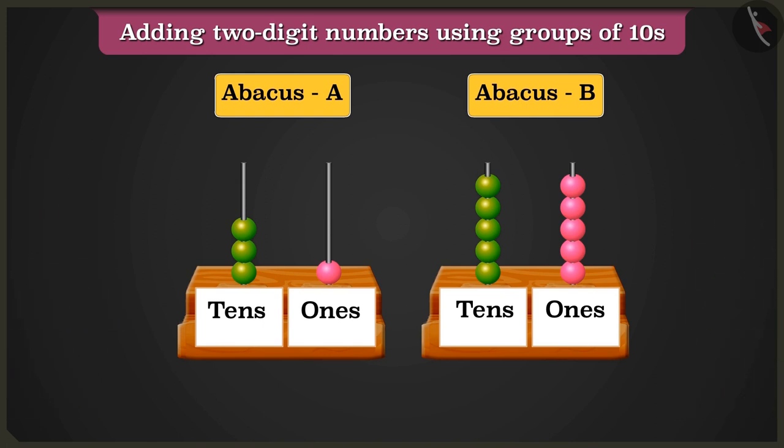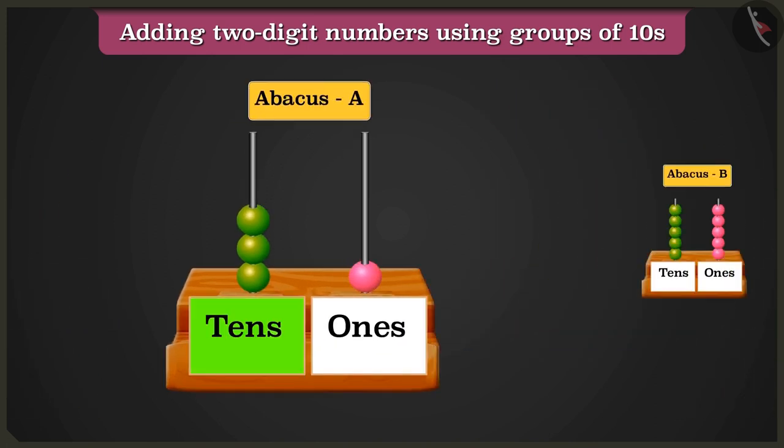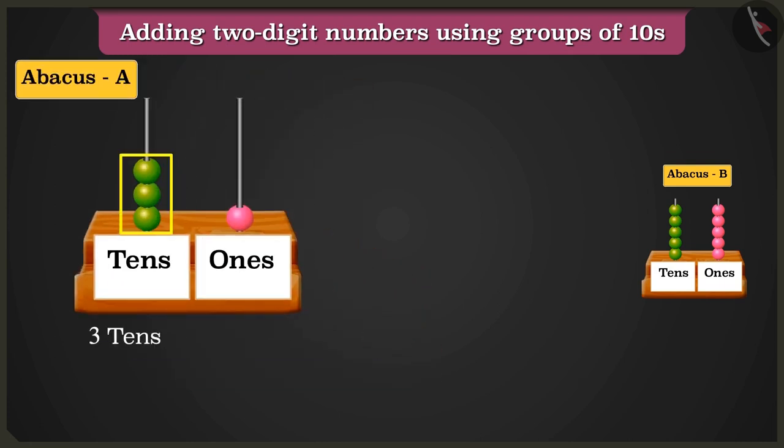Look, in abacus A, the box of 10s has 3 beads and the box of 1s has only 1 bead. So here, abacus A has 3 10s and 1 1s.